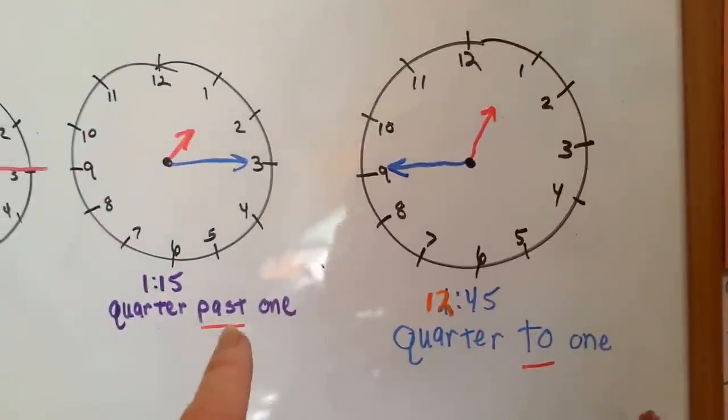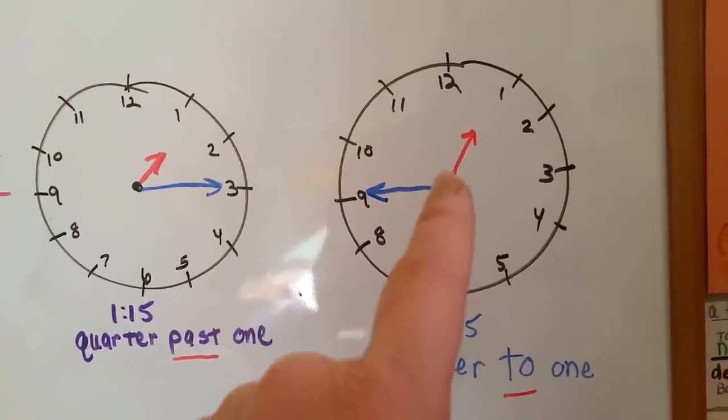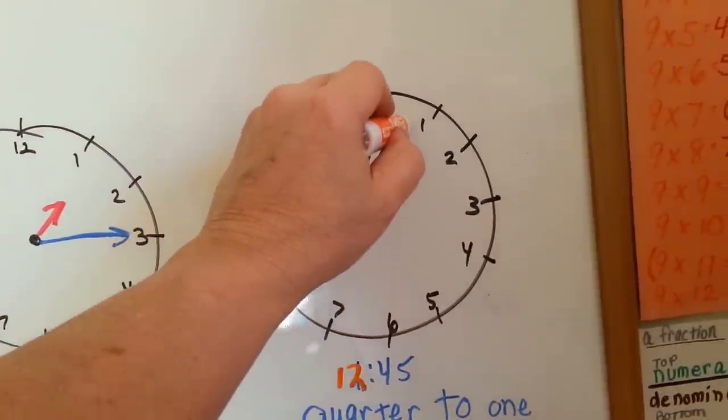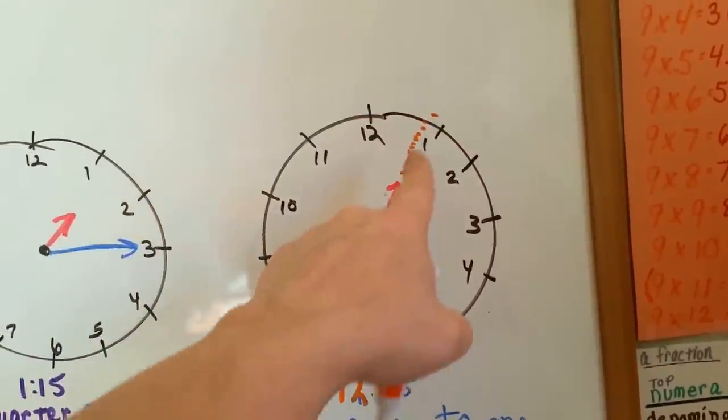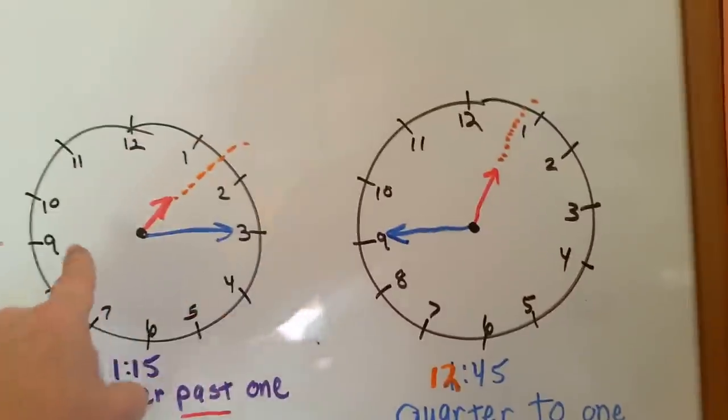This is past 1. This is to 1. It's not quite at the 1 yet. If you made dotted lines coming up, you'd see that it's not quite to the 1 yet. And this one is past the 1.